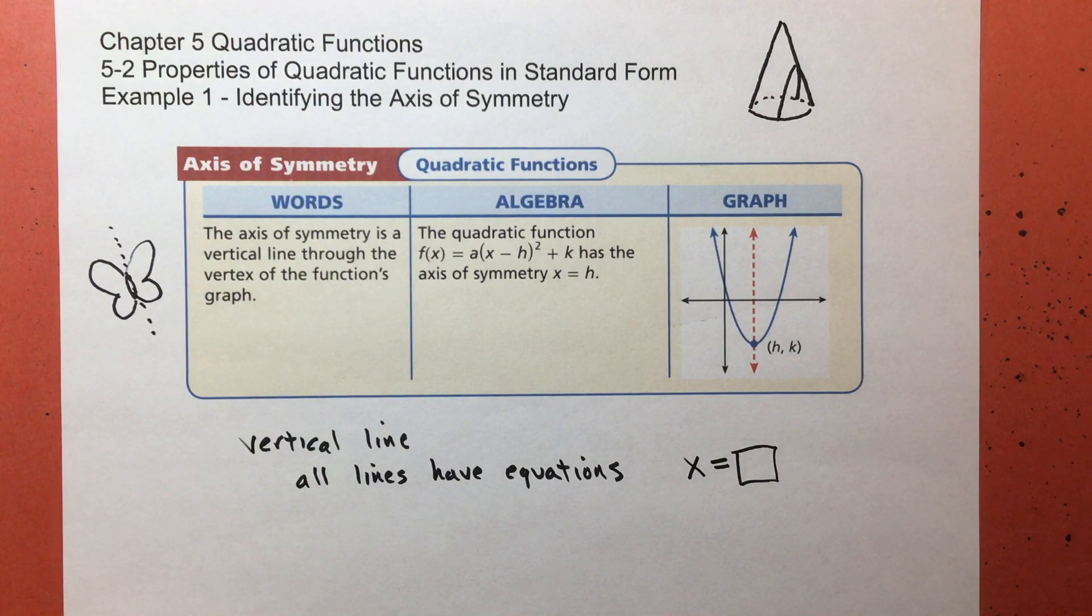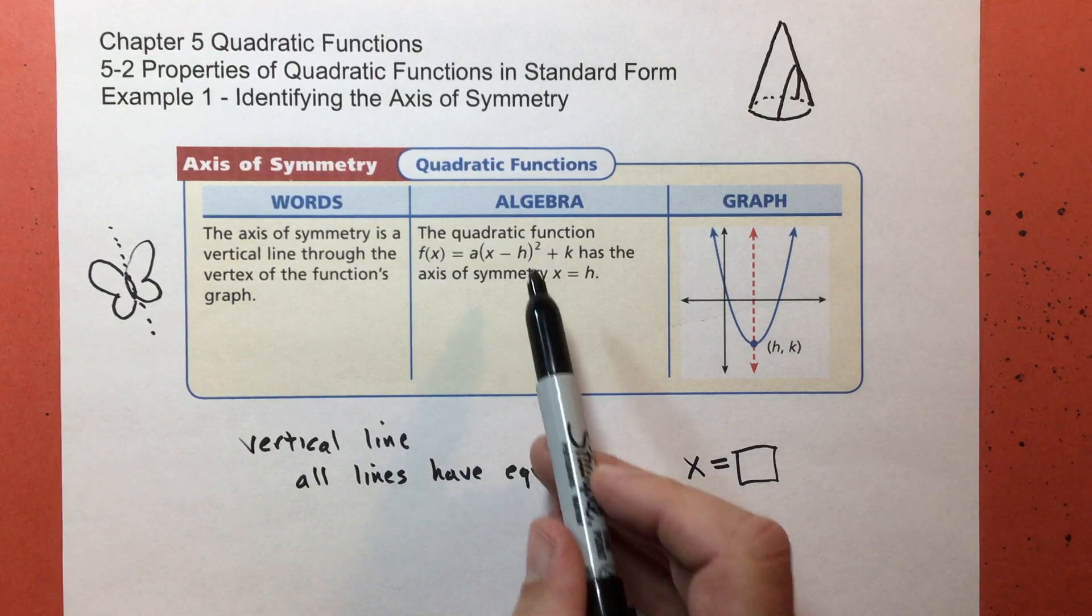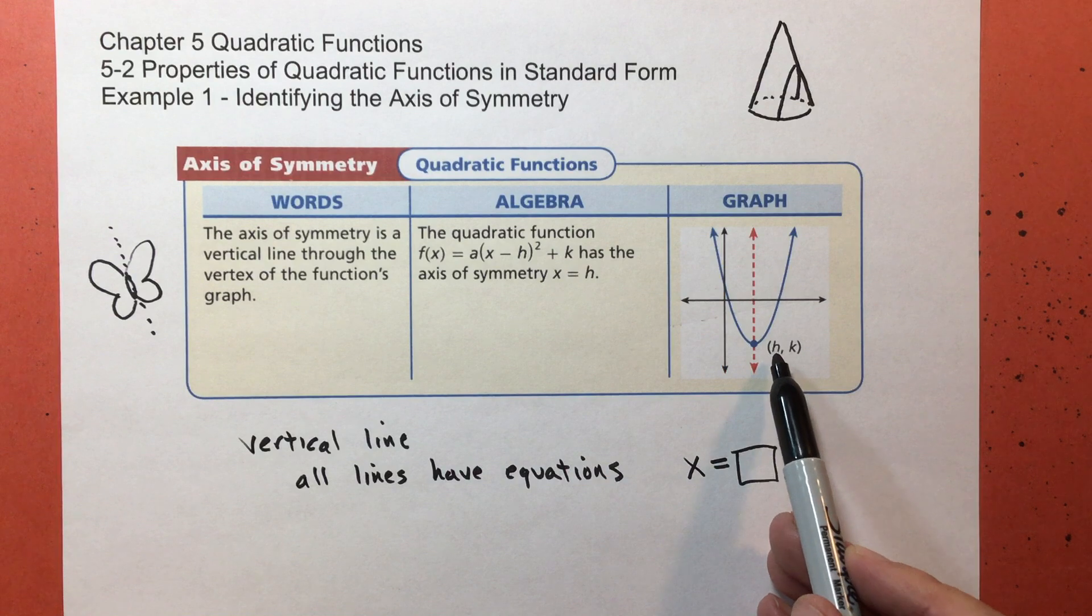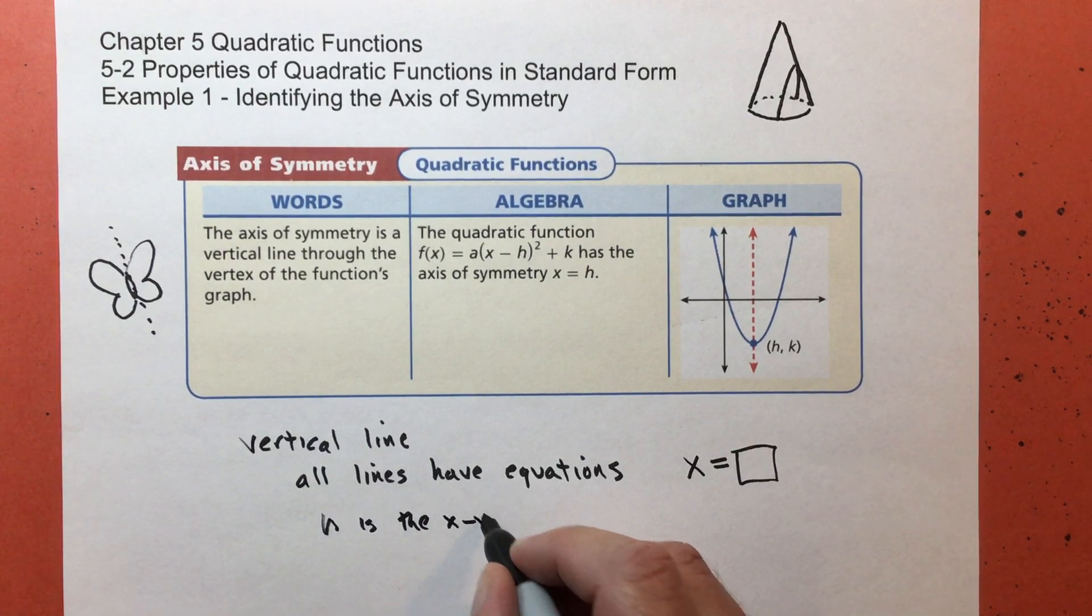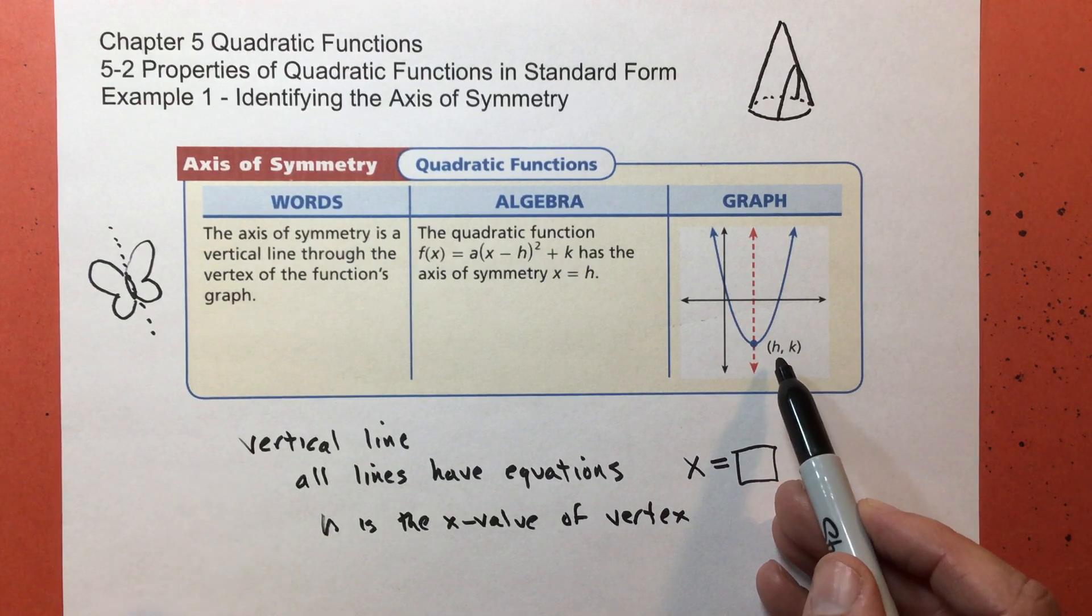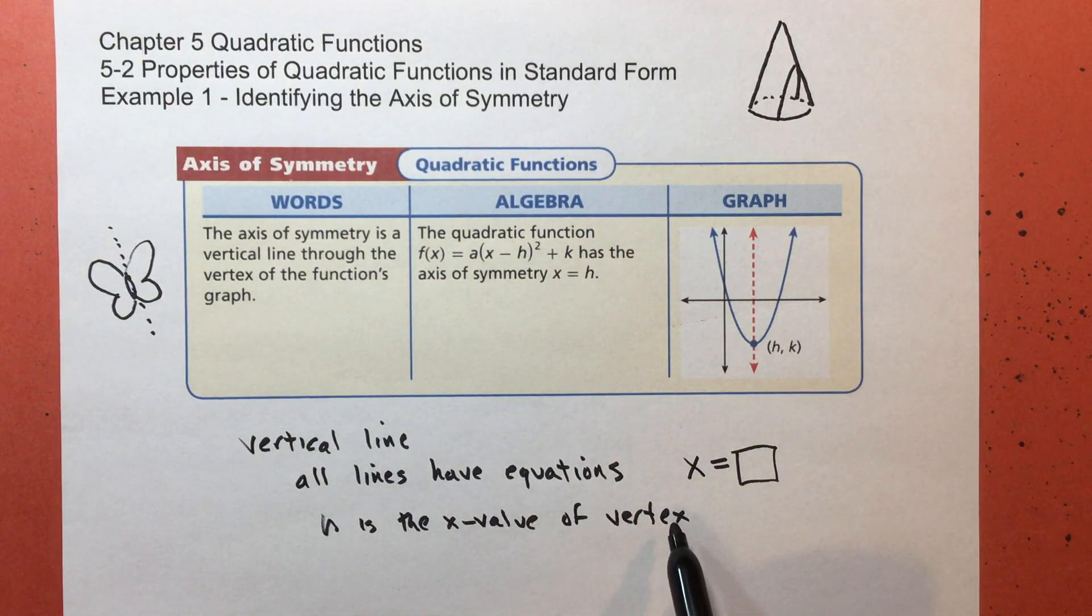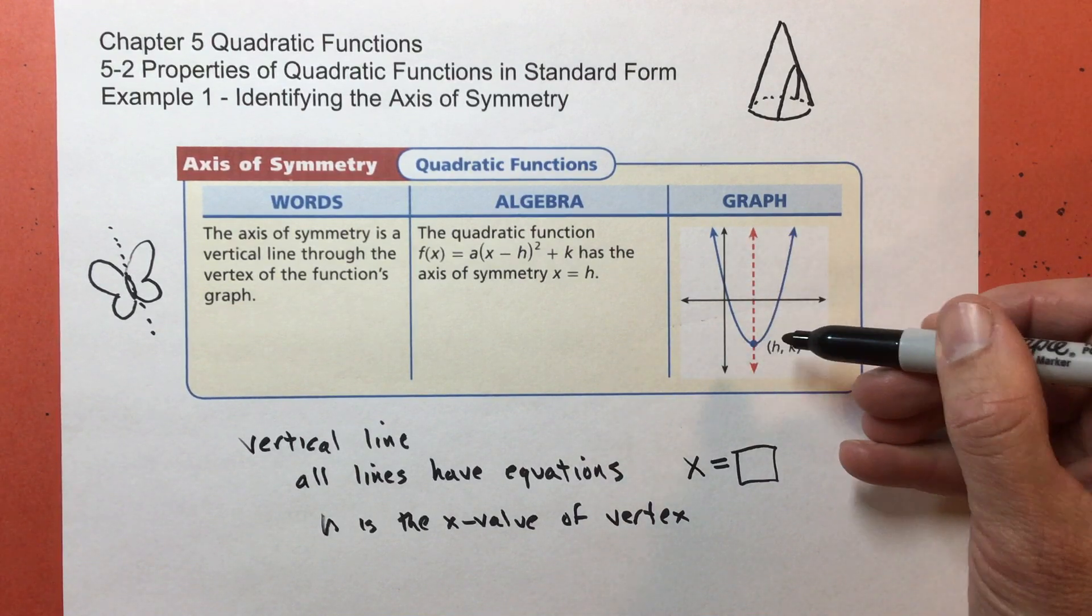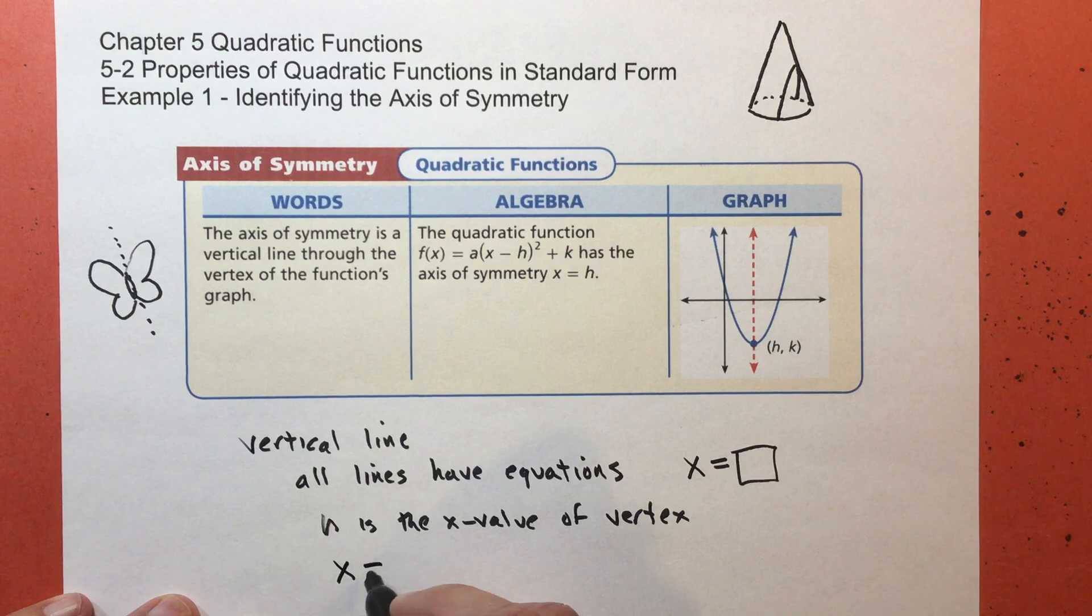How do I know what the equation of the axis of symmetry is for a quadratic function that's in vertex form? We know that h and k represents the vertex (h, k). The h is the x value of the vertex. Remember, it's not going to be an h, it's going to be like a 3 or a 5. Whatever that vertex is, it'll be an actual number. So that will be the x value of the vertex. The axis of symmetry goes through that vertex, so the x value of the vertex is the number that I put in here. So the equation is going to be x equals whatever h is.